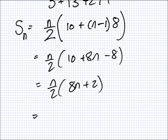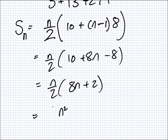Let's clean this up a little bit. That's N over 2, 10 plus 8N minus 8. That's N over 2, 8N plus 2. There's one more thing. I could expand. So, N times N? N squared. And 8 divided by 2? 4.